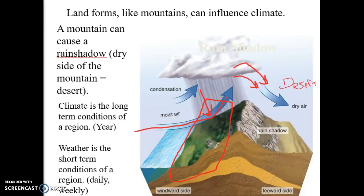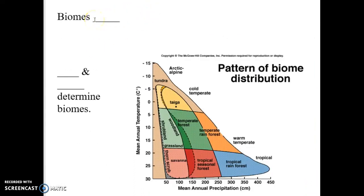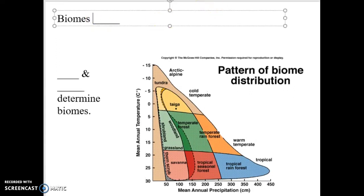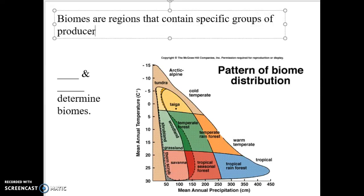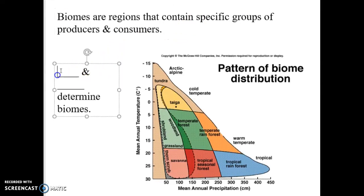How does climate change influence life? How does it play a role in the biomes? Biomes are regions that contain specific groups of producers and consumers. You have specific plants, producer bases, that determines your consumer level. That's what makes a biome unique.